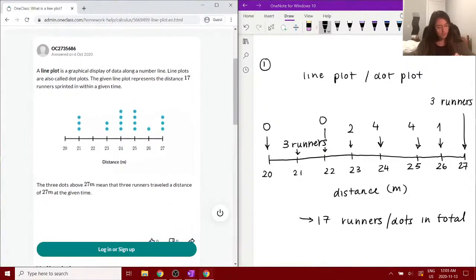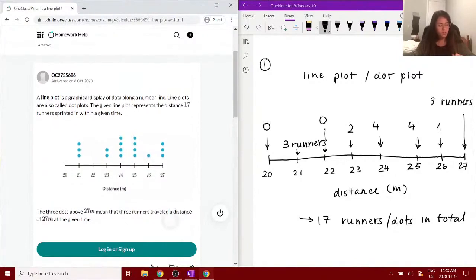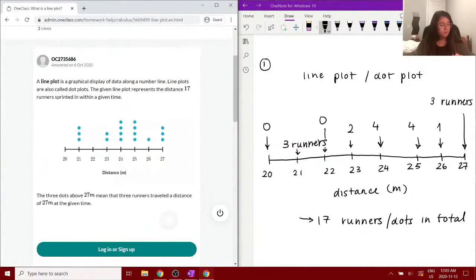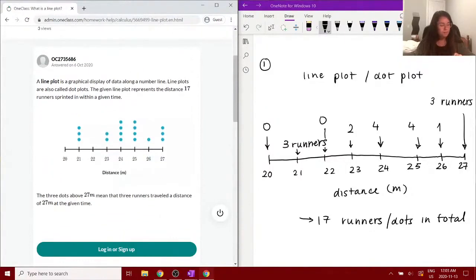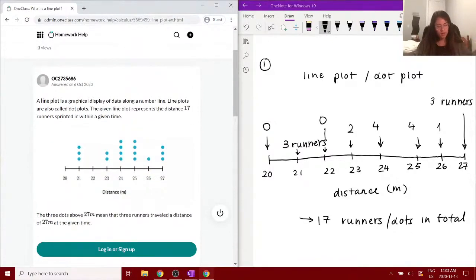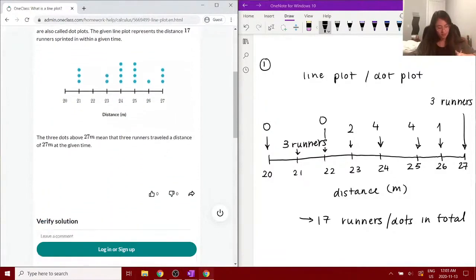So that is what a line plot or dot plot shows. Of course, this is just one example with runners and distance, but the number of points above a mark on the line plot has that meaning. We can go on to the next question.